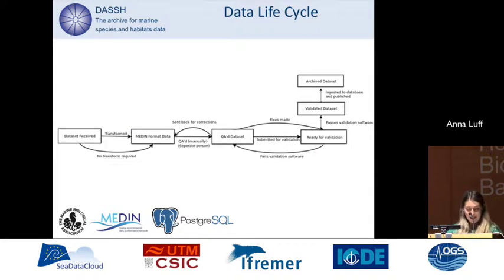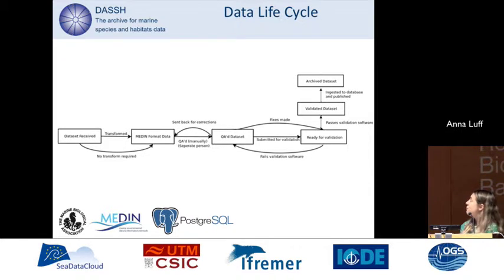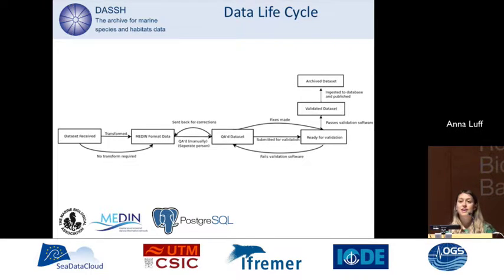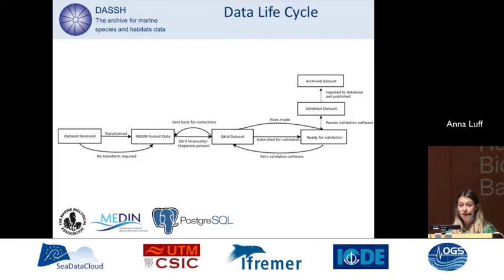Next I'll talk through our data lifecycle within DASH. We receive datasets, then transform them into the Medin format — the Medin guidelines are available online so data can be sent to us already in that format. We then archive and disseminate the data free of charge. We then manually QA the dataset, a process repeated until it passes. We then submit it through our validation tool, again repeated until it passes, at which point the dataset is archived using our ingestion tool.